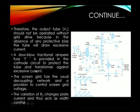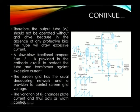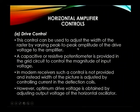The screen grid has a usual decoupling network and a provision to control screen grid voltage. The screen grid decoupling network controls the screen grid voltage. Variation of R2 changes the plate current and thus acts as a width control — changing the value of R2 controls the width. Using the horizontal amplifier controls, we can control drive and width.